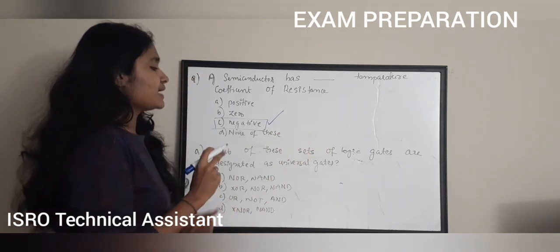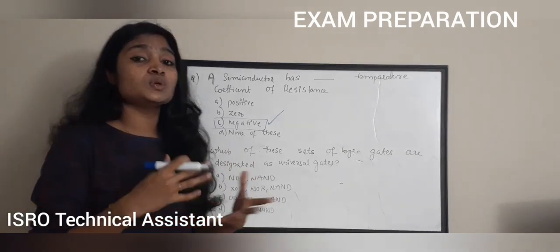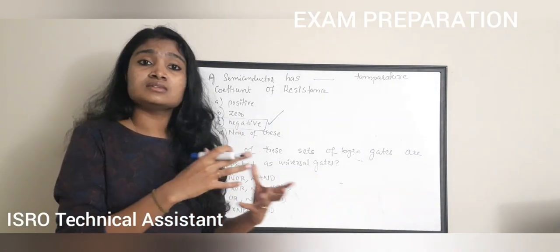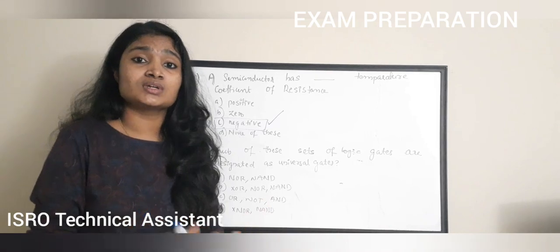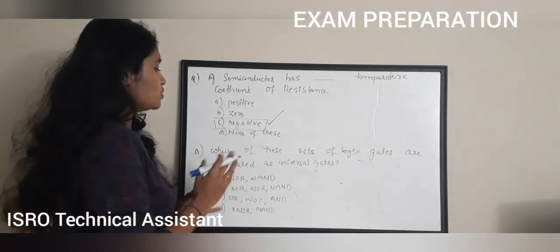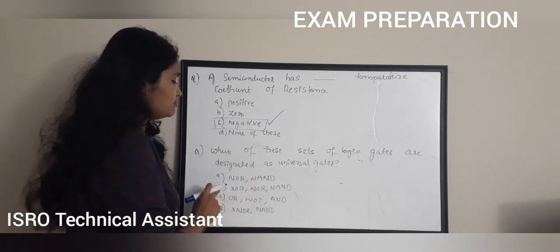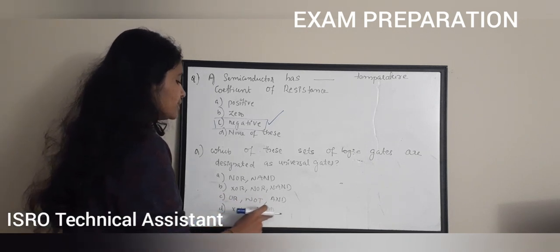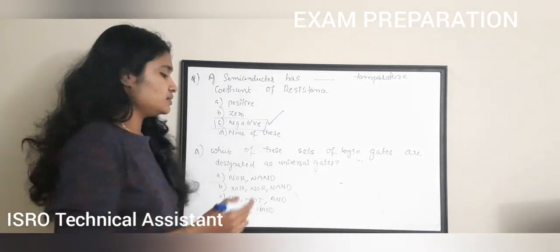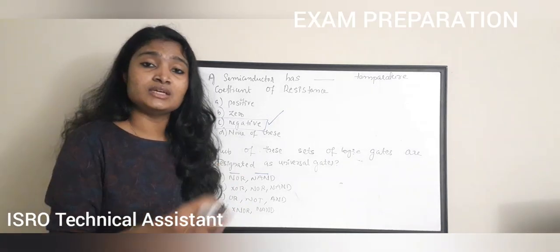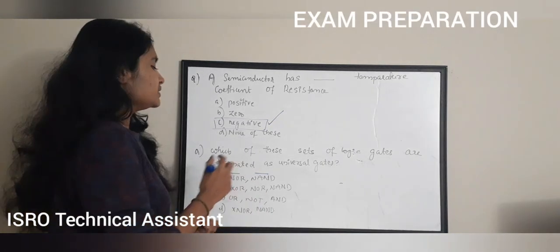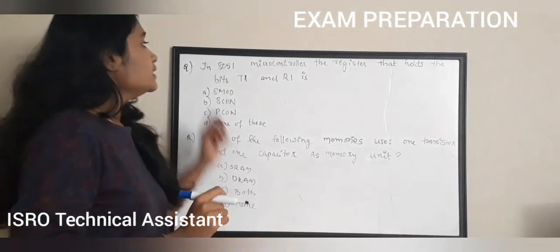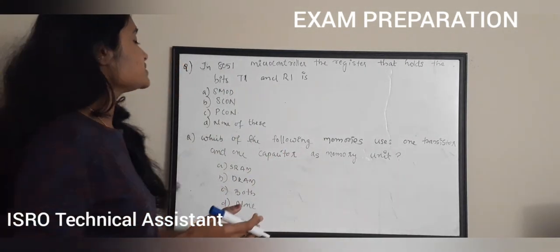Which of the following sets of logic gates are designated as universal gates? Options: A) NOR, NAND; B) EXOR, NOR, NAND; C) OR, NOT; D) XNOR, NAND. Universal gates are those from which any other gate can be constructed. The universal logic gates are NOR and NAND. The correct answer is option A — NOR and NAND.